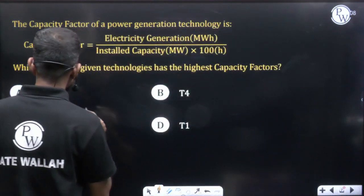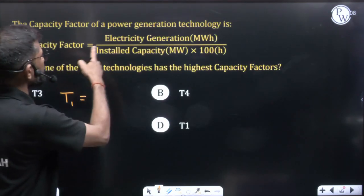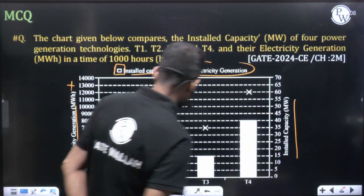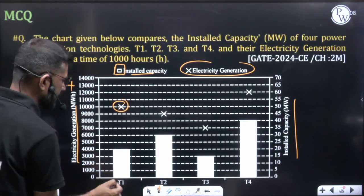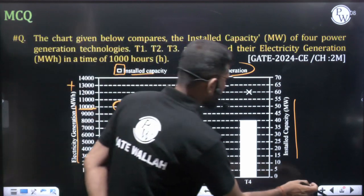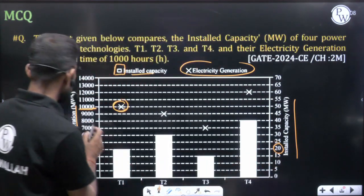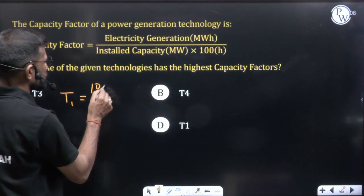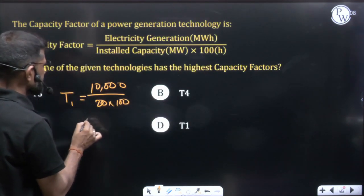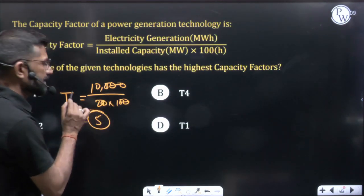Let us calculate the capacity factor for each technology. For technology T1: electricity generation is 10,000 MWh, and installed capacity is 20 MW. So capacity factor = 10,000 divided by 20, multiplied by 100. After cancelling zeros, this gives 50 for T1.